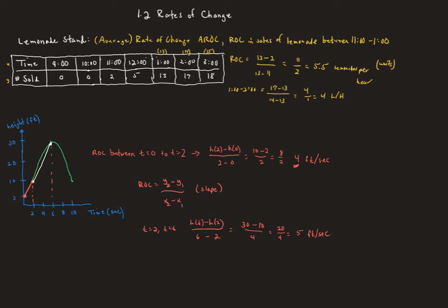One more: average rate of change from t equals 6 to t equals 10. We get h(10) minus h(6) over 10 minus 6. h(10) is back to 10, h(6) is 30, and 10 minus 6 is 4. So 10 minus 30 is negative 20, giving us negative 5 feet per second. The negative sign means this object is now falling — its height is decreasing toward the ground.